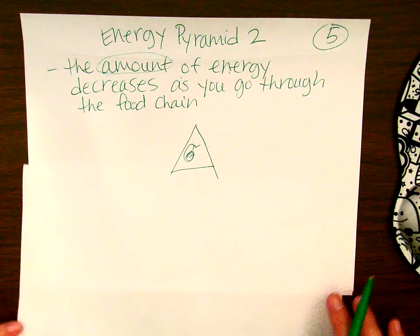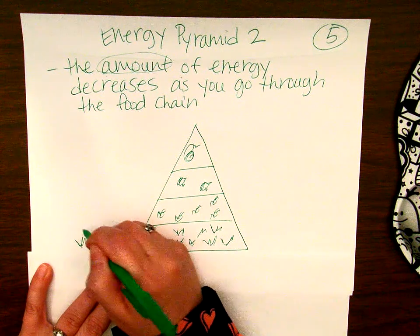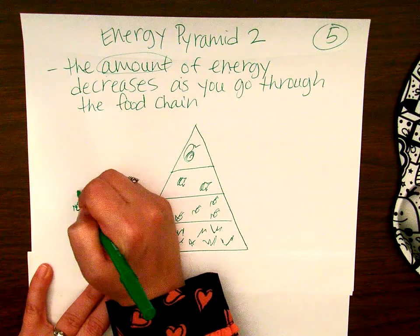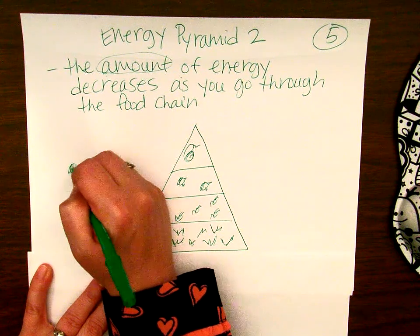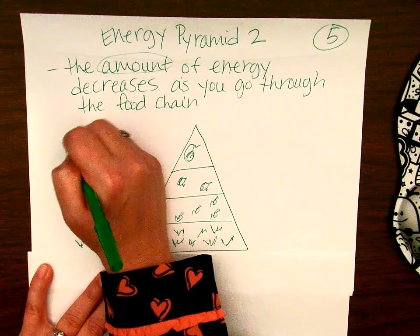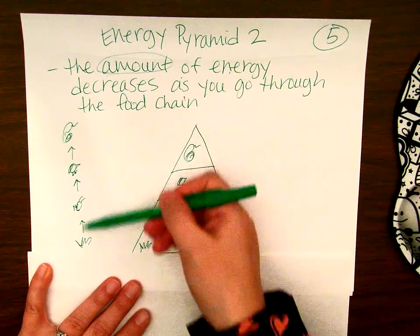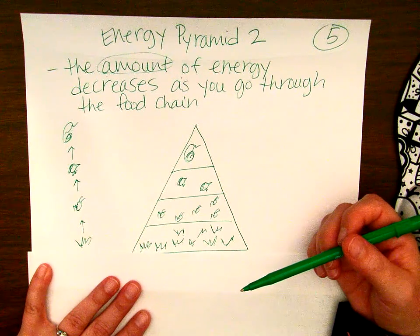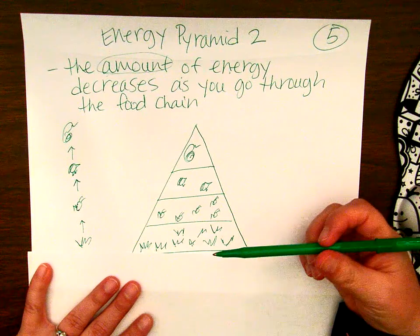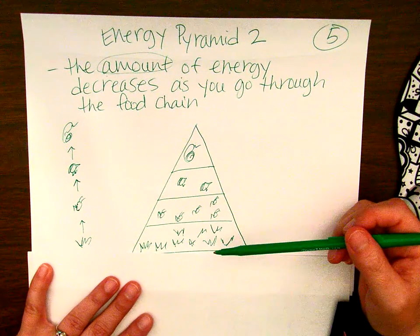This is like a vertical food chain. We have our grass, which is eaten by the cricket, which is eaten by the bird, and that bird is eaten by the snake. So this is really a vertical food chain.